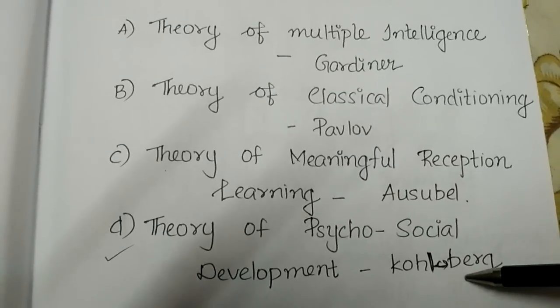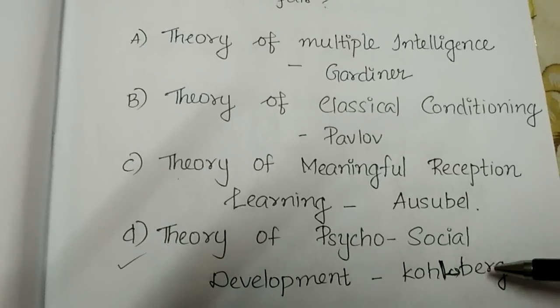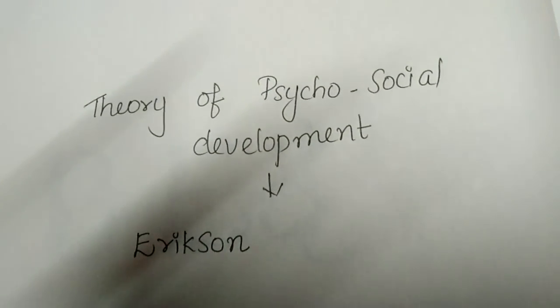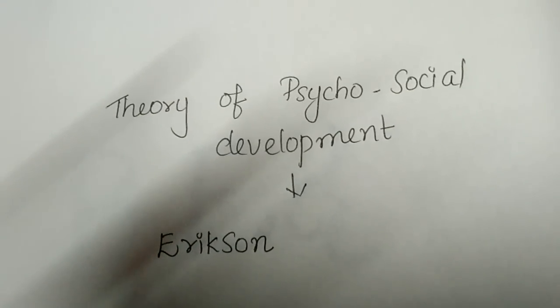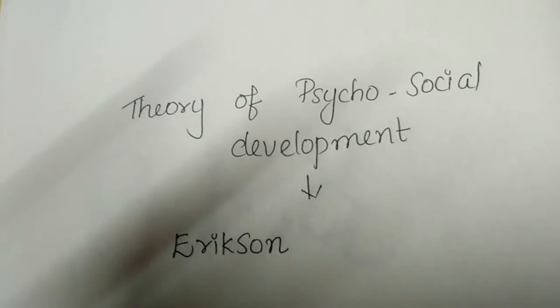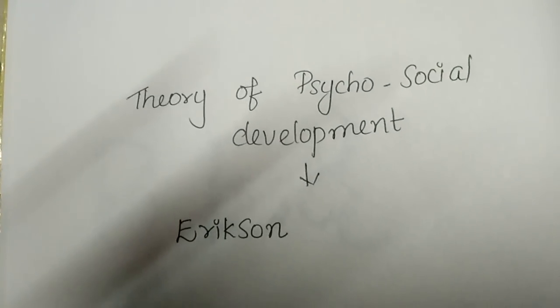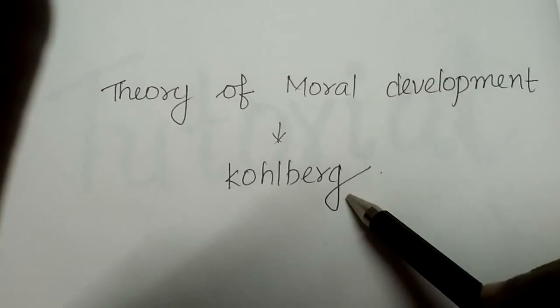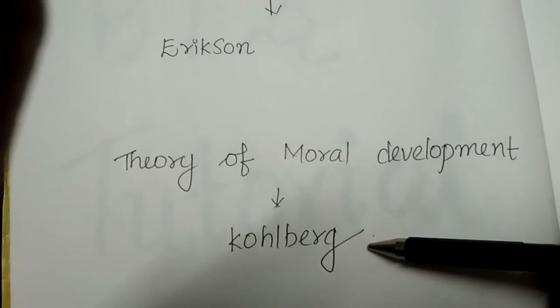The theory of Psychosocial Development — its propagator is Erikson. Erikson means the theory of Psychosocial Development. The theory of Moral Development is called Kolberg. So: Psychosocial Development = Erikson; Moral Development = Kolberg.